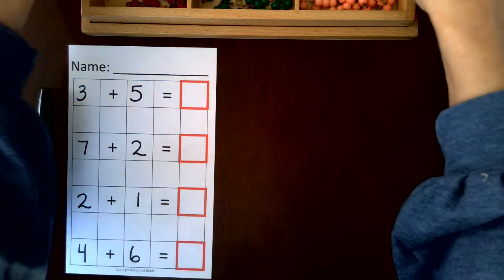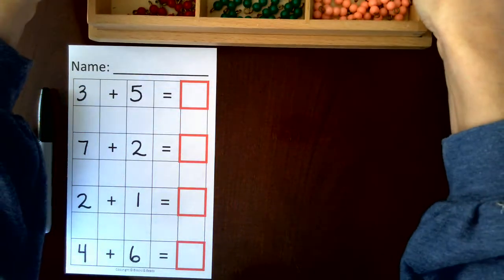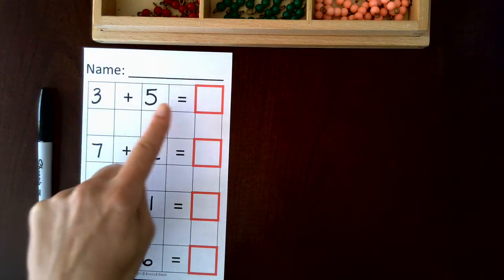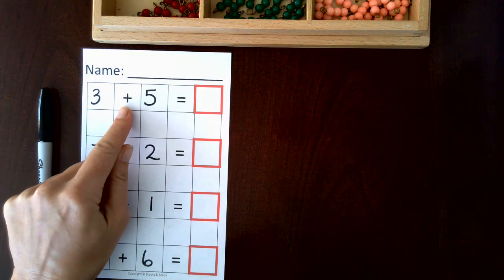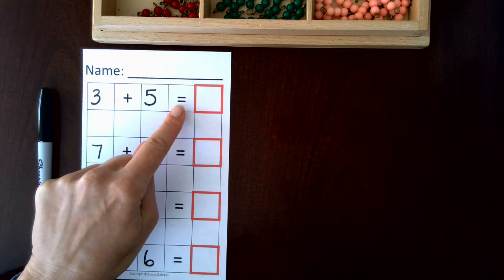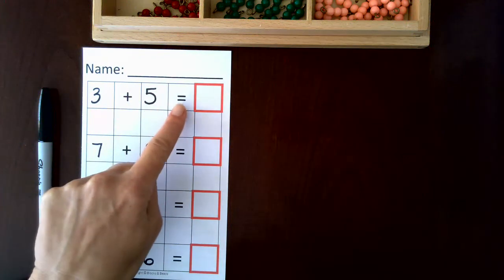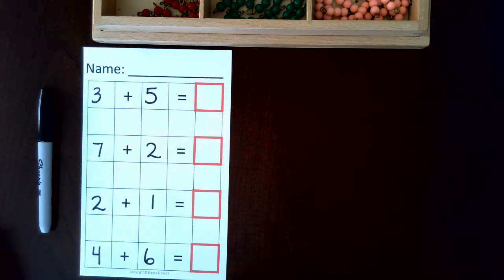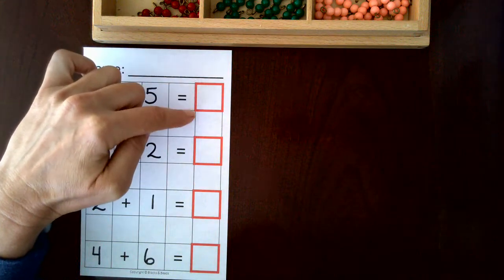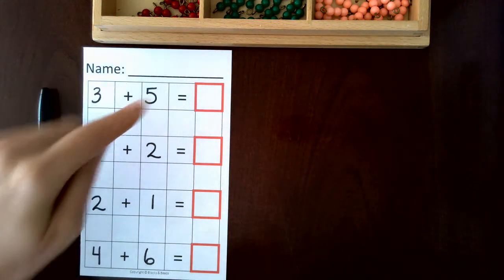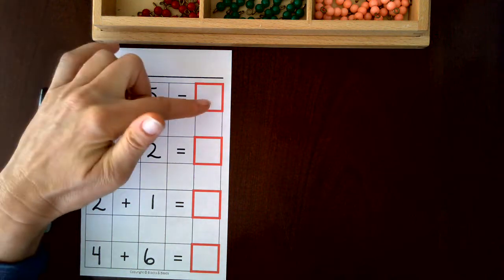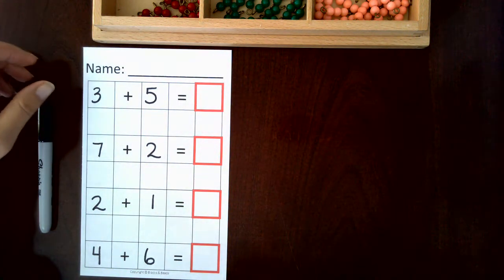This lesson we will be using the colored bead bars and we will be recording answers. Because this might be the first time a child has seen these symbols, you might start by introducing: this is the plus symbol and this means plus or add. This is the equals symbol. So we can say three plus five equals, and we write our answer here. At first the numbers are written in these large boxes and the answer is highlighted here in red. We skip a line in between equations to help the child visually see the process of reading and writing out the answer to an equation.